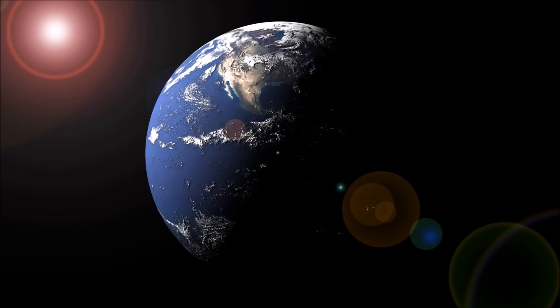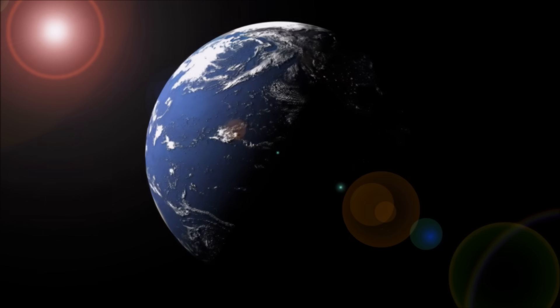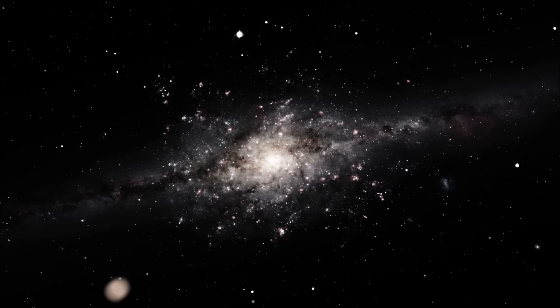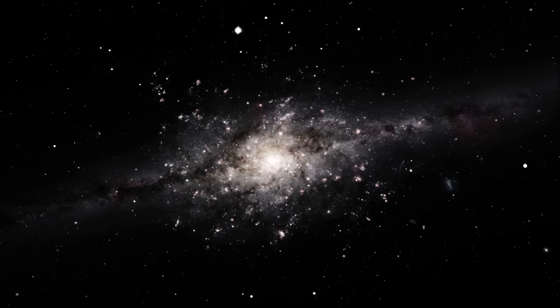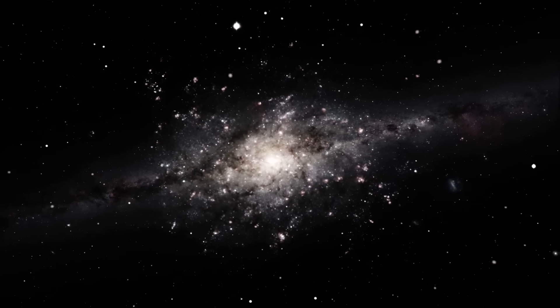It only takes the earth one year to complete an orbit around the sun, but scientists estimate that it will take the sun about 230 million years to complete an orbit of the galaxy.